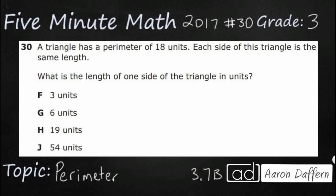Hello, and welcome to 5-Minute Math. Today we are looking at the third grade concept of perimeter. This is standard 3.7b in the great state of Texas, and we are using item number 30 of the 2017 released star test.